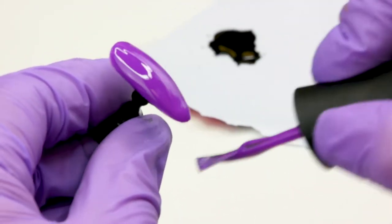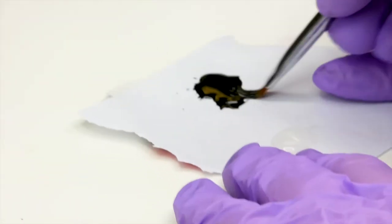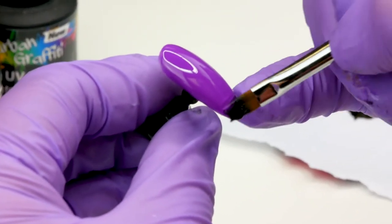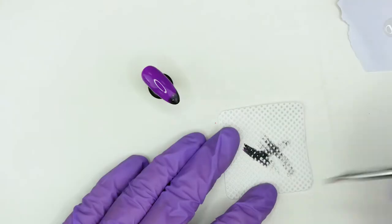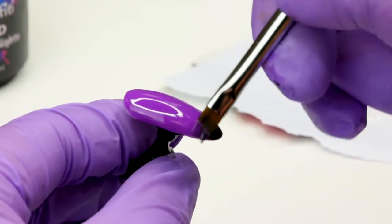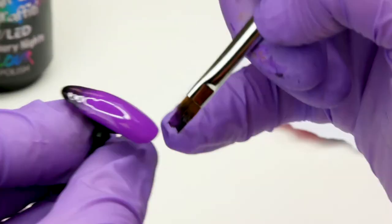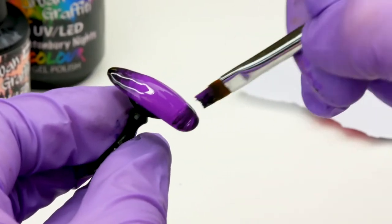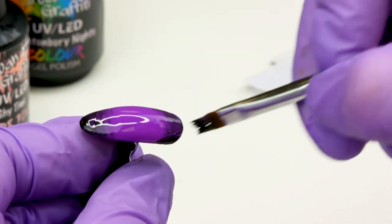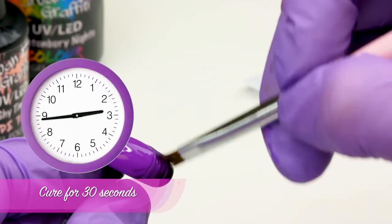But before we cure that, we're going to go in with Serious Black. I'm going to use the Ombre Brush to just scoop a little bit of this up. Just ombre the bottom, blend it ever so slightly. And the same with the top—frame the nail. When you've done that, pop that in the lamp to cure for 30 seconds.